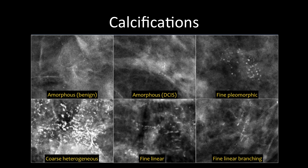DCIS can be identified by calcifications, and in this slide you see different types of calcifications from mammogram. They are described as amorphous, fine pleomorphic, coarse heterogeneous, fine linear, and fine linear branching. These terms carry different prognostic values. Not all amorphous calcifications are going to be malignant — for example, fibrocystic changes and sclerosing adenosis or columnar cell change can cause amorphous calcifications. However, low-grade DCIS can also present with amorphous-type calcification.